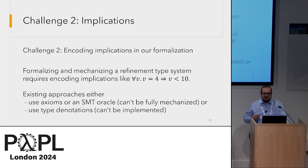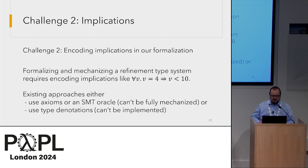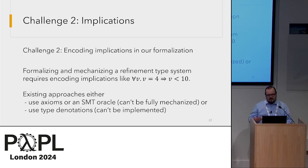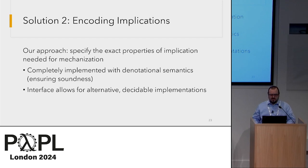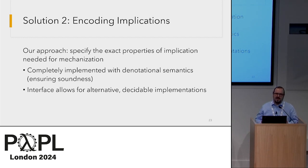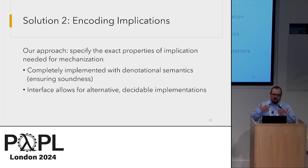Speaking of implications, it's a challenge to encode implication in our system. Typical approaches either give an axiomatization, use an SMT oracle (which cannot be fully mechanized), or use type denotations (which can be mechanized but are typically undecidable to implement). Our direction was a hybrid: we formalized exactly the properties needed of our refinement implication relationship, supplied a mechanization of a denotations-based proof of the soundness of our implication, and left a neat interface where in the future we could encode other decidable implementations, such as formalizing an SMT solver.